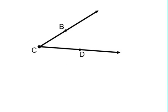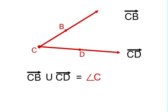So our new set contains all of the single-digit prime numbers as well as all of the single-digit odd numbers. Here's an angle that consists of ray CB and ray CD. We can take the union of the two rays, which means we combine them, and of course that gives us the entire angle, which we can label as angle C.